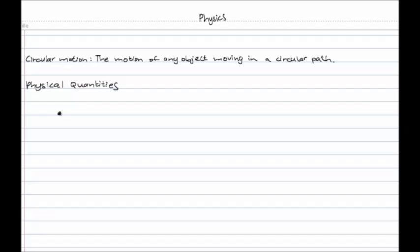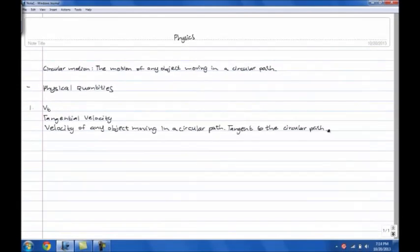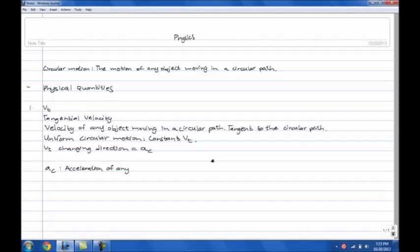The first is Vt, which is the tangential velocity. Tangential velocity is the velocity of any object moving in a circular path, always tangent to the circular path. If the tangential velocity does not change, the motion is called uniform circular motion.